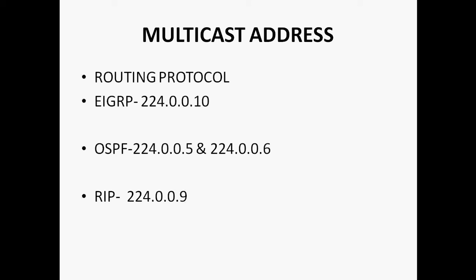For example, you can take three routers configured with the EIGRP routing protocol. After configuring EIGRP on all three devices, they will communicate using that multicast address only. OSPF uses 224.0.0.5 and 224.0.0.6, and RIP uses 224.0.0.9. Likewise, each and every protocol has some multicast address.